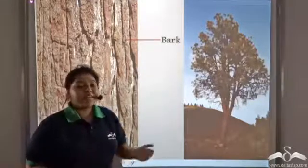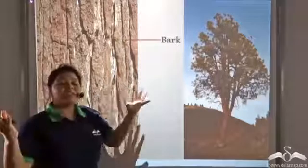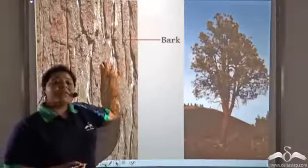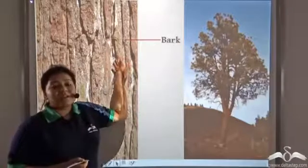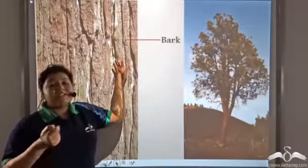So the sclerenchyma forms the bark, which is the outer hard covering of a plant. This bark provides a lot of protection to the plant because it is hard, tough, and rigid.